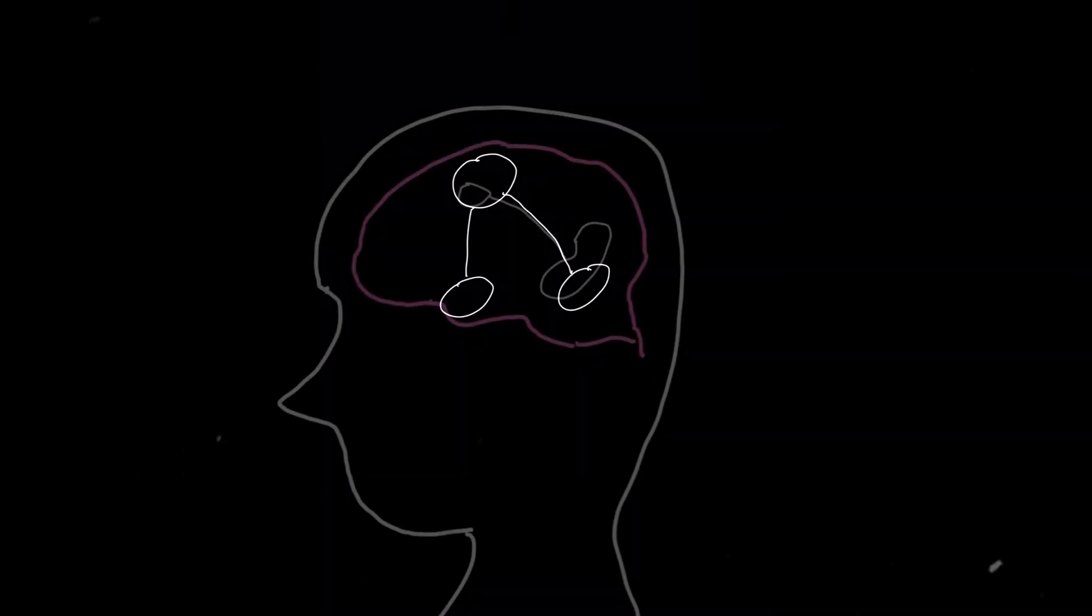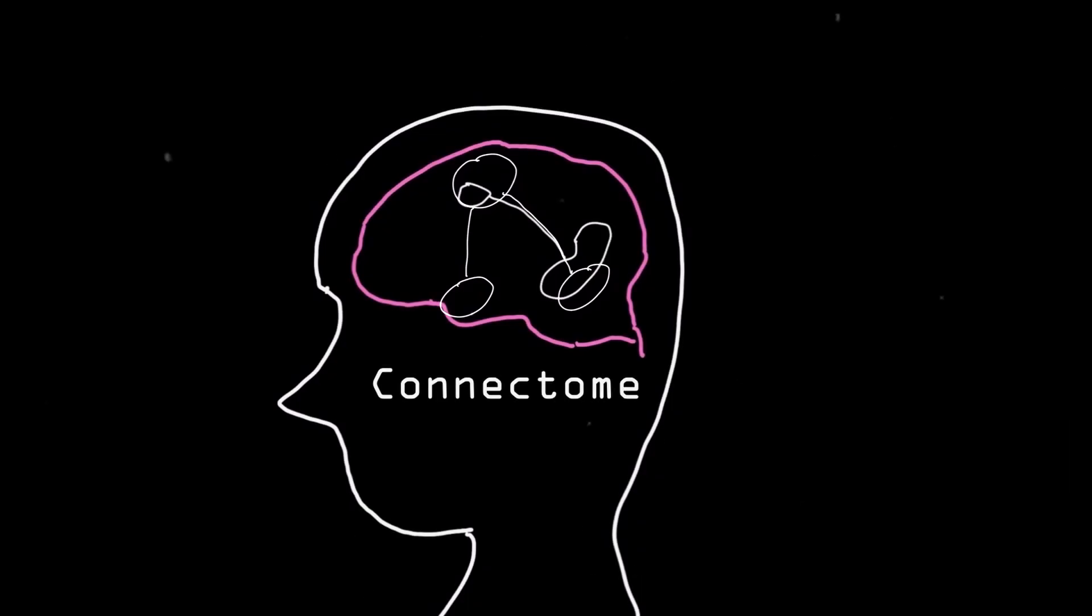First, let's model the brain's connectome as a graph, which consists of nodes that are connected by edges. The nodes are connectome areas, while the edges are structural or functional connections between them.